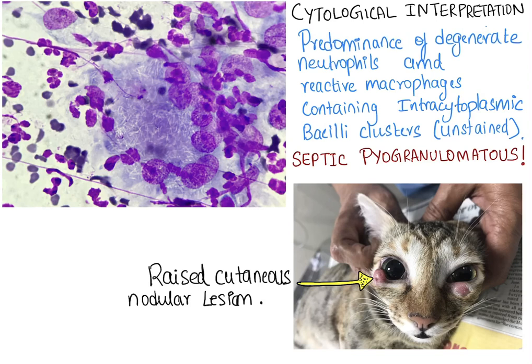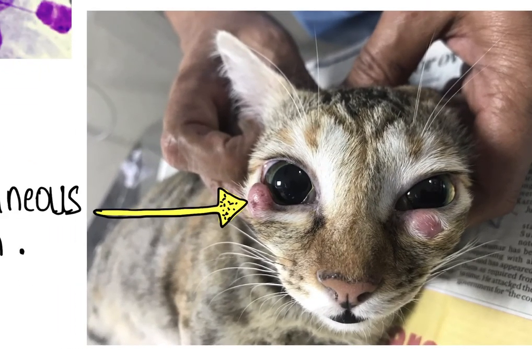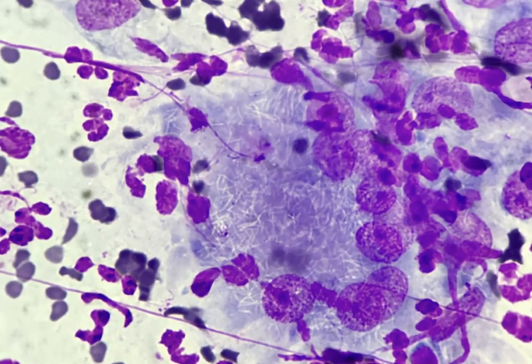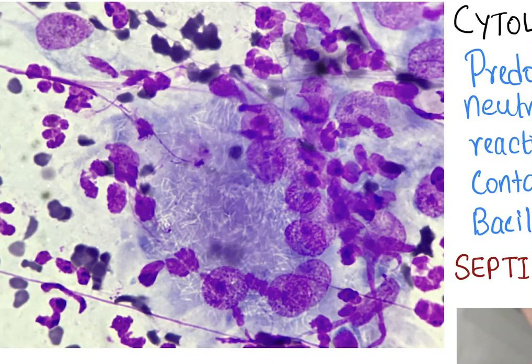This was a case that we got in our clinic. You can actually see the nodular lesions caused by mycobacterium — these are cutaneous, raised, hairless growths that were not painful at all. When we did the cytology, we saw numerous filamentous bacteria which didn't stain well with Diff-Quik, and they were all inside macrophages. You can also see lots of degenerate neutrophils in the background.